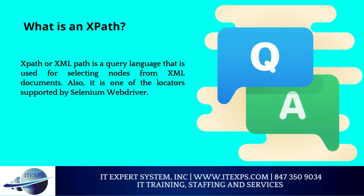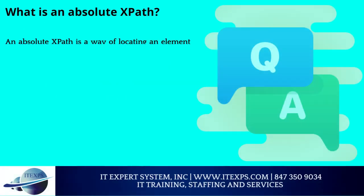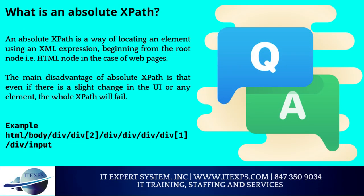How can we inspect web element attributes in order to use them in different locators? We can use the developer tool and plugins like Firebug. The developer tool can be launched by pressing F12 on the browser, allowing users to hover over any element and find its HTML properties. Firebug is a Firefox plugin that provides development tools for debugging applications; it is used specifically for inspecting web elements to find attributes like ID, class, name, etc. What is an XPath? XPath or XMLPath is a query language used for selecting nodes from XML documents, and it is one of the locators supported by Selenium WebDriver. What is an absolute XPath? An absolute XPath locates an element using an XML expression beginning from the root node (the HTML node for webpages). The main disadvantage is that even a slight change in the UI or any element will cause the whole XPath to fail.